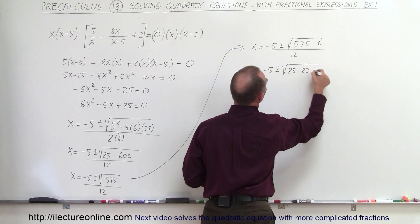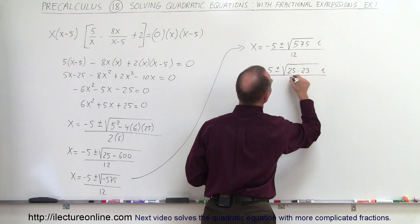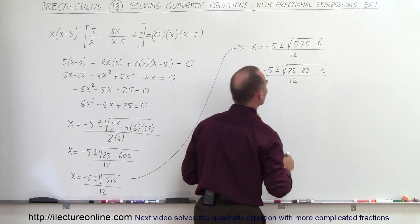looks like 23, times i, divided by 12. So we can go ahead and take the square root of 25.